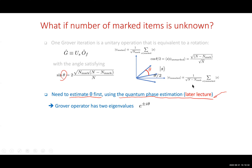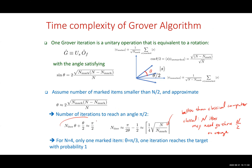To solve for the number of marked items, you need to find the eigenvalues of the rotation. A rotation has two eigenvalues. If you can estimate the phase, then you know theta, and you can directly calculate the number of iterations needed.